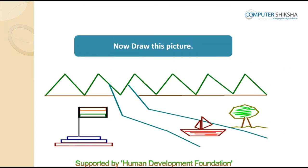In this drawing, you can see that there are many pictures — a mountain, the sun, a flag, a river, and a boat. So we will also make all these pictures in one drawing itself.